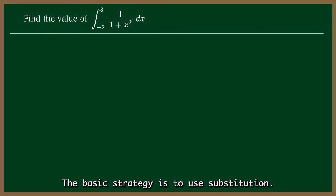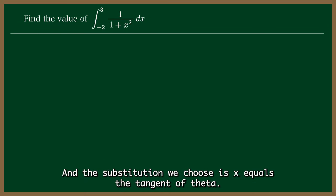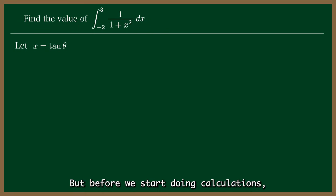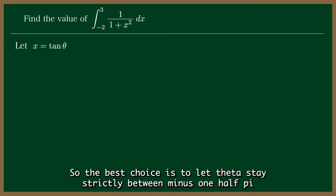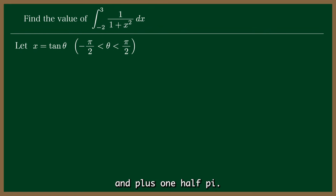The basic strategy is to use substitution, and the substitution we choose is x equals the tangent of theta. But before we start doing calculations, we must not forget to decide the range of theta. We want theta to run through a continuous interval in which the tangent function takes all real values. So the best choice is to let theta stay strictly between minus 1 half pi and plus 1 half pi.